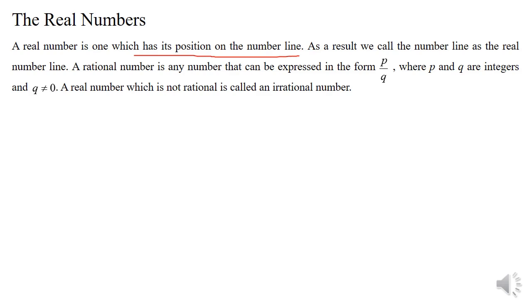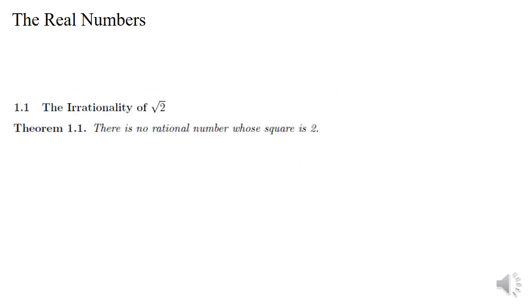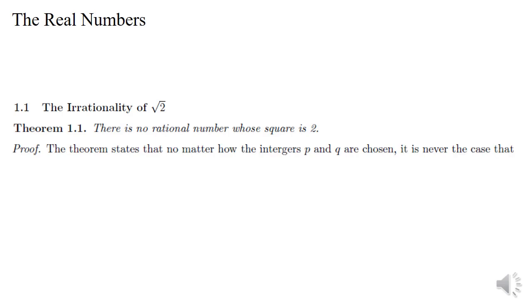A rational number is any number that can be expressed in the form P by Q, where P and Q are integers and Q is not equal to 0. A real number which is not rational is called an irrational number. We will now move on to the next section: the irrationality of root 2. We have a theorem which states that there is no rational number whose square is 2 — that is, there is no rational number P by Q such that (P by Q)² equals 2. This is what we have to prove.